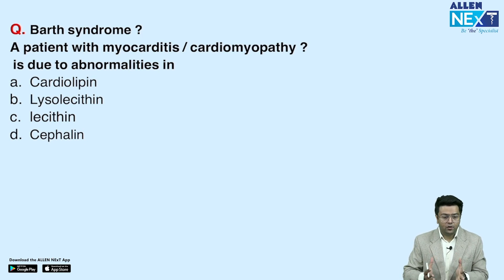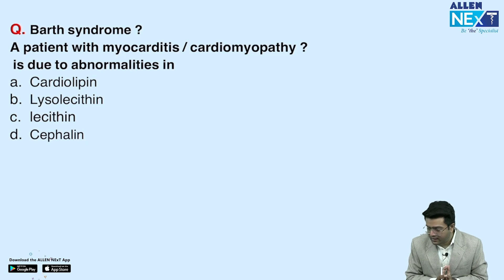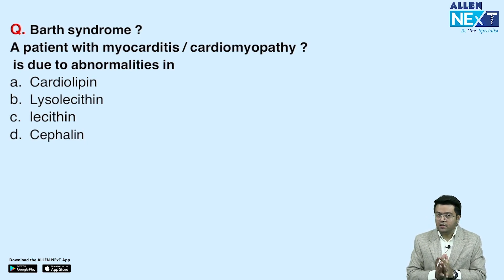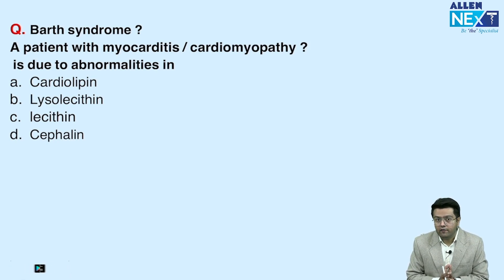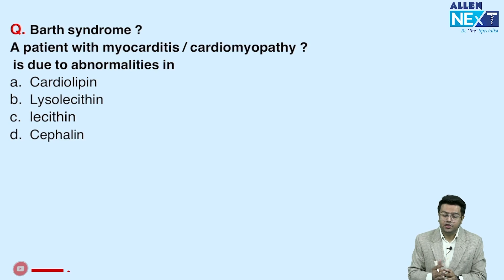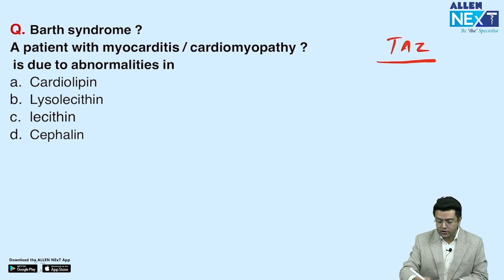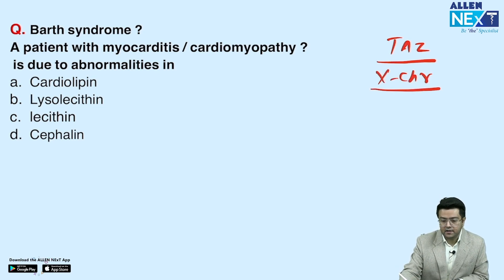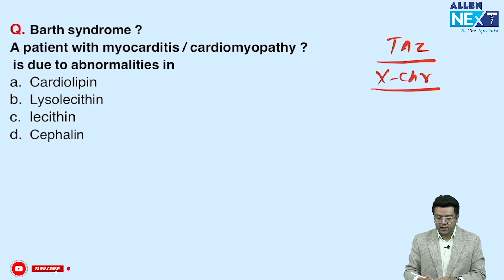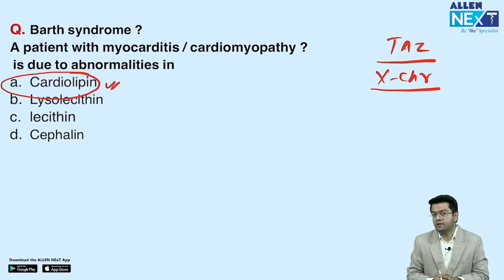There was a question on Barth syndrome with cardiomyopathy mentioned in the diagnosis. In Barth syndrome, also called X-linked endocardial fibroelastosis, there is a defect in the EAZ gene present on the X chromosome. This disease primarily affects males. In this disease there is a disorder of cardiolipin synthesis — cardiolipin being the most common phospholipid in the heart, specifically in the inner mitochondrial membrane.